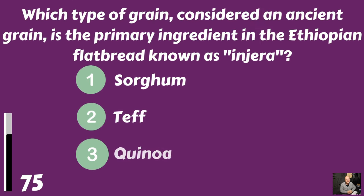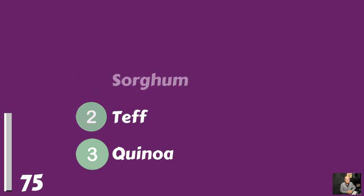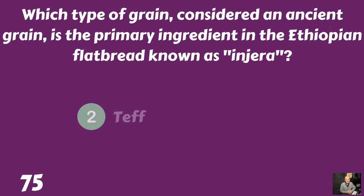Which type of grain, considered an ancient grain, is the primary ingredient in the Ethiopian flatbread known as injera? Sorghum, teff, or quinoa? That would be teff.